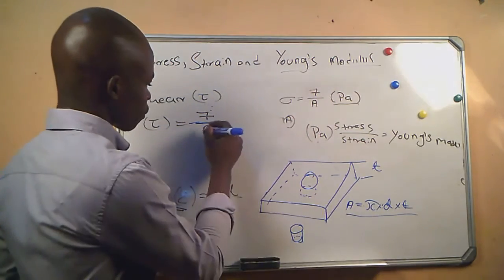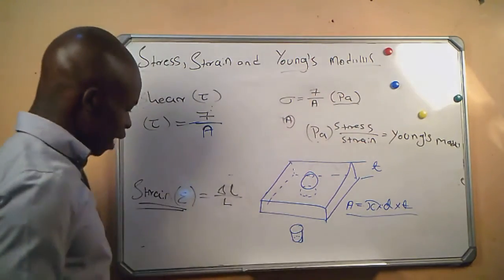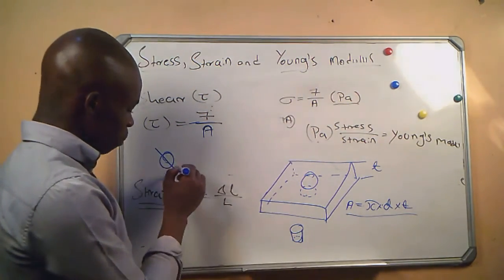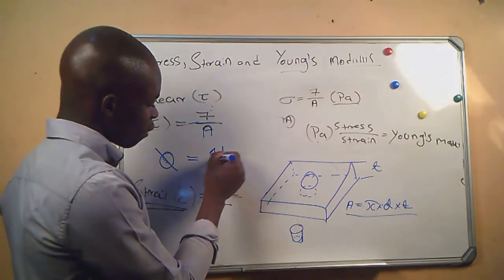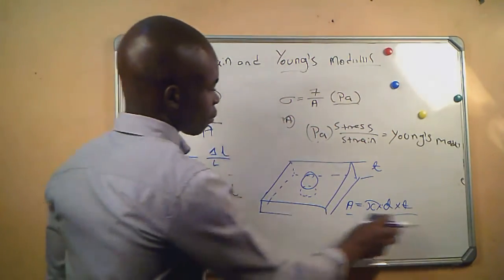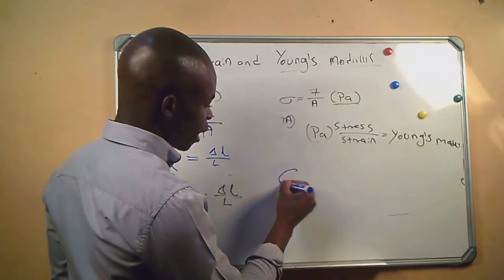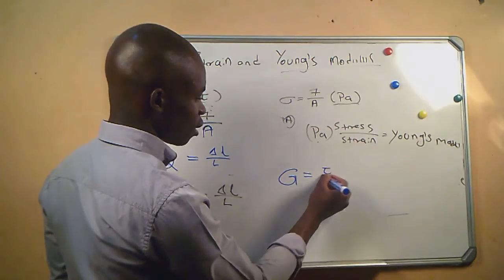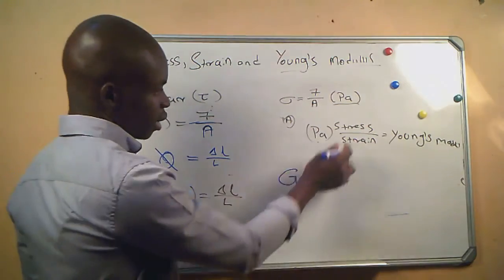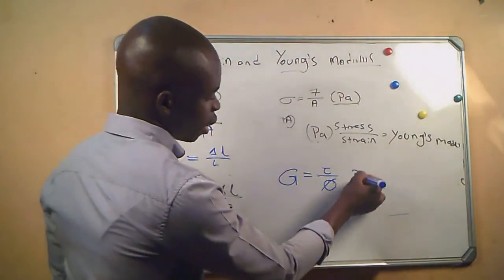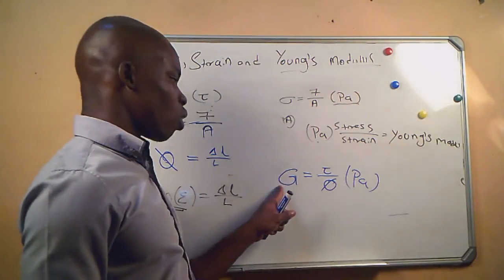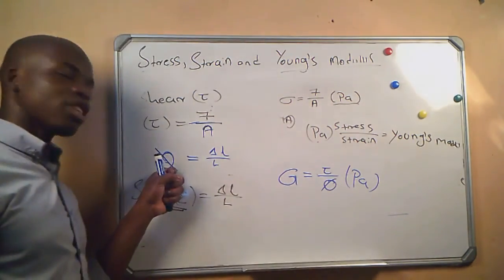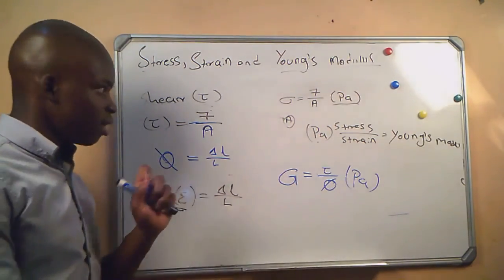The strain of a shear force is represented by its formula and is still the change in length divided by length. For shear, the Young's modulus is given by G. Since Young's modulus is the ratio of stress divided by strain, and stress is in Pascal, the shear Young's modulus G is also in Pascal. The symbols just indicate we are working with shear stress and shear strain.